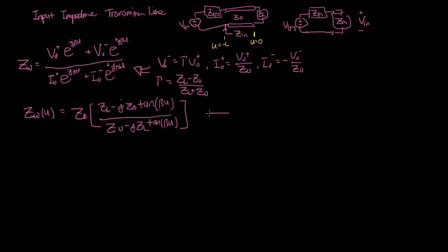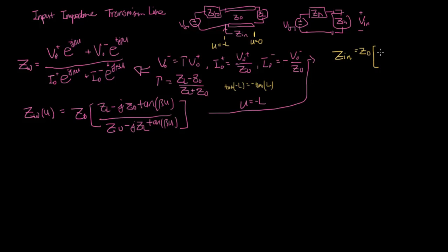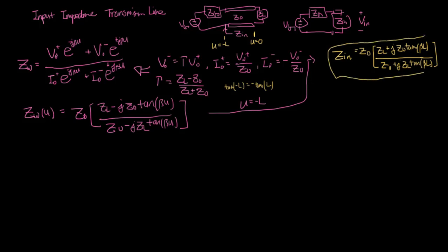With this expression, we plug in u = -L to get the input impedance. Recall that tan(-βL) = -tan(βL), so the negatives cancel and the key take-home equation becomes: Z_in = Z_0 · [Z_L + jZ_0 tan(βL)] / [Z_0 + jZ_L tan(βL)]. This works for any transmission line length L.